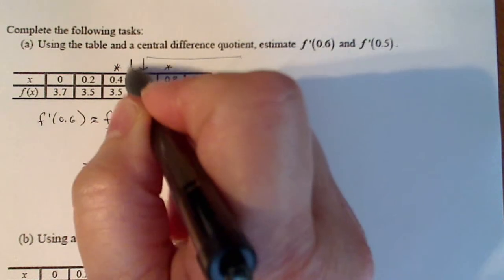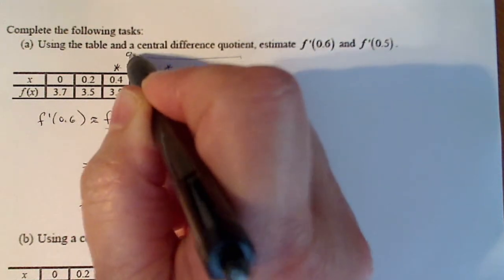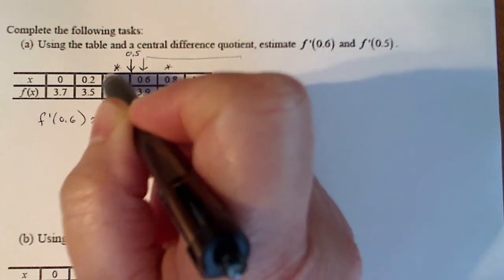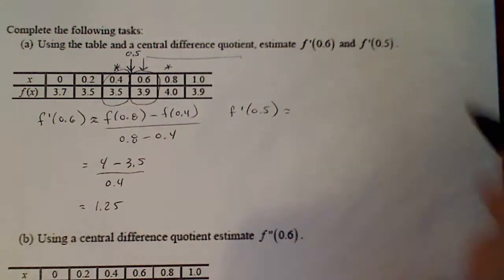And f prime of 0.5 is approximately equal to, now I look at my chart again, I don't see 0.5. 0.5 is actually right here. So the two points that are around it, so it's in the center, are these two points here. So those are the ones I'm going to use.